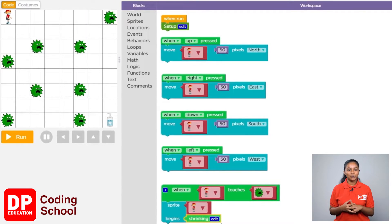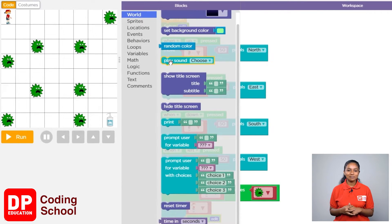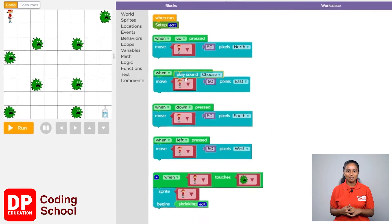If this child touches covid virus, let's make the child shrink and also create a coughing sound. Click on word and drag the play sound block and place it below the sprite begins block.